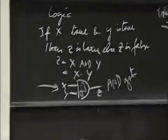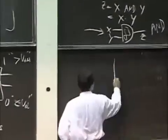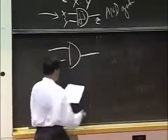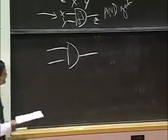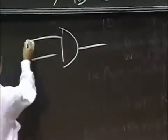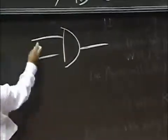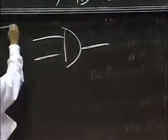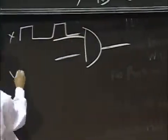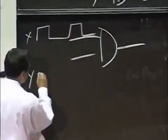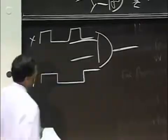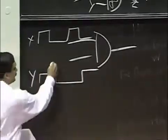Let me show you a quick demo. Draw a diagram. What I'm going to show you is a signal feeding an AND gate. And one signal is going to look like this, labeled X. And my signal Y is going to look like this, Y below X.